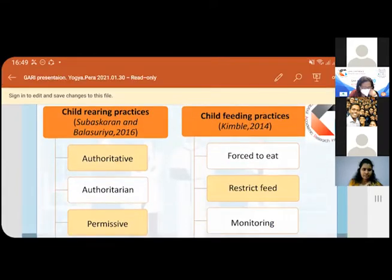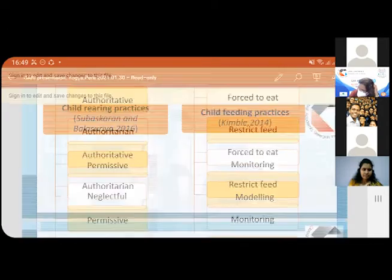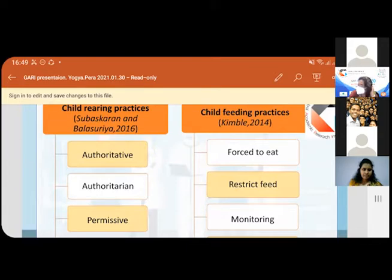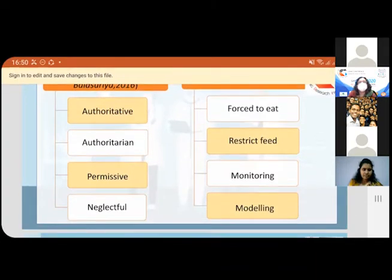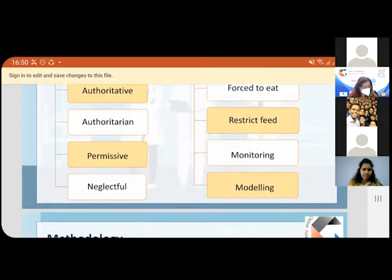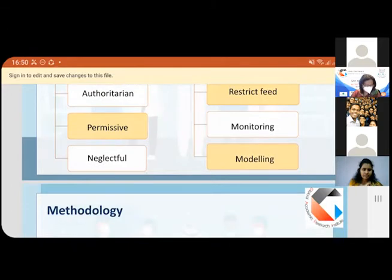Moving to feeding practices, according to Kimble, forced eating, restricted feeding, monitoring, and modeling are the four types. Forced feeding is when they compel their children to eat something. Restricted feeding establishes limitations on feeding. Both are less time-consuming and controllable attributes. Monitoring and modeling encourage the child's participation and allow their choices. In monitoring, parents strictly adhere to standard nutritional parameters. In modeling, parents modify the environment and type of foods to enhance feeding.